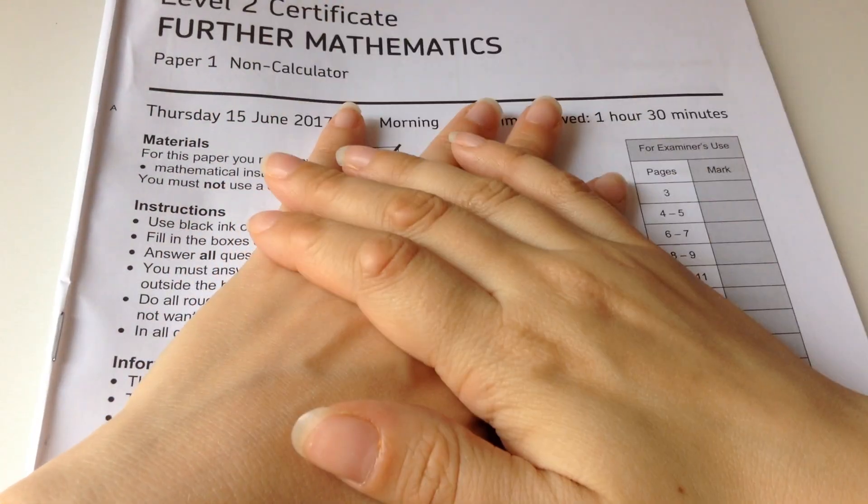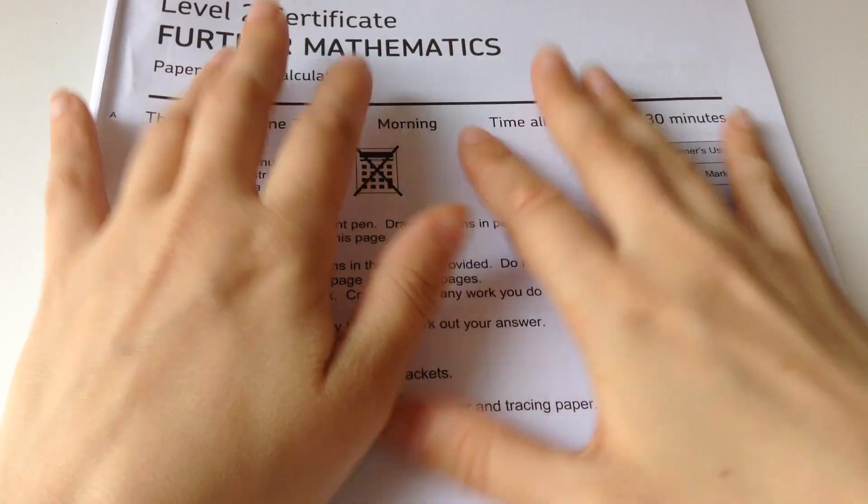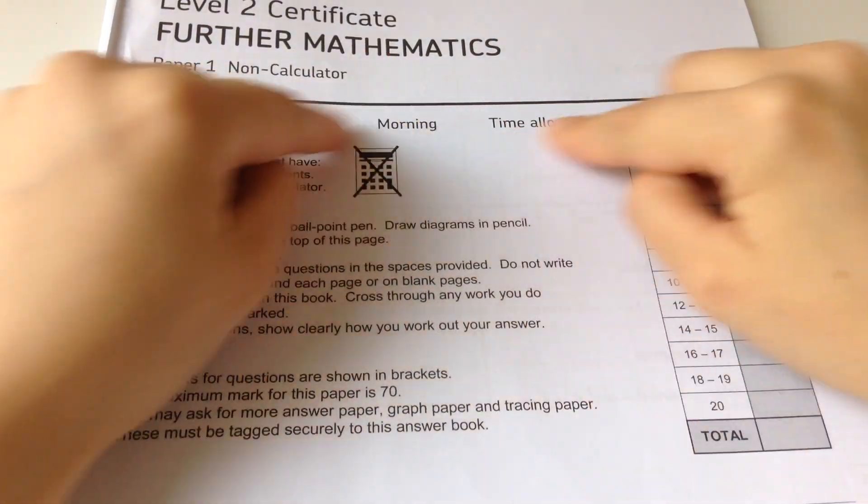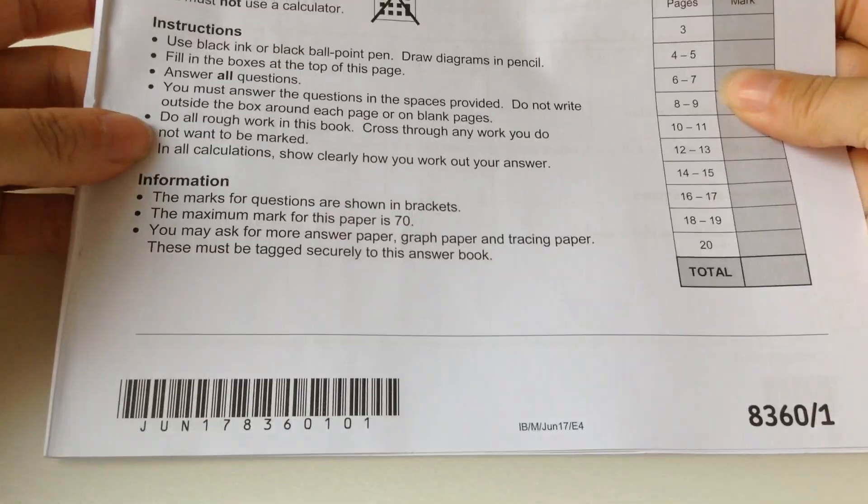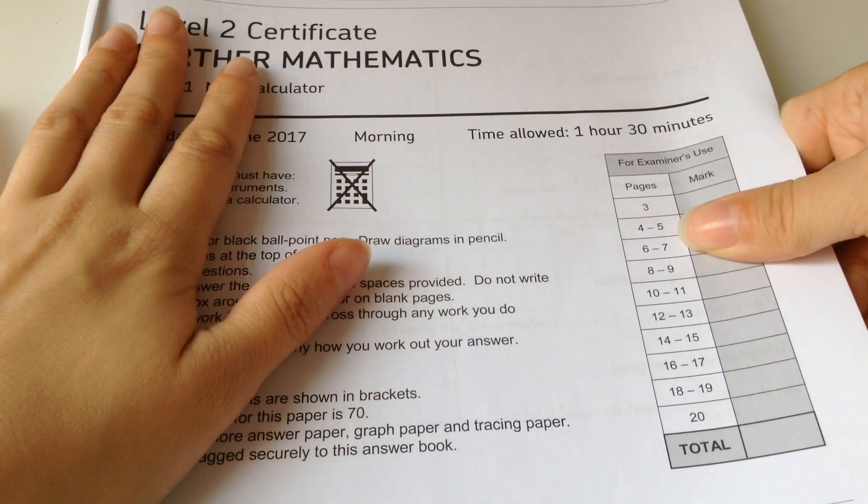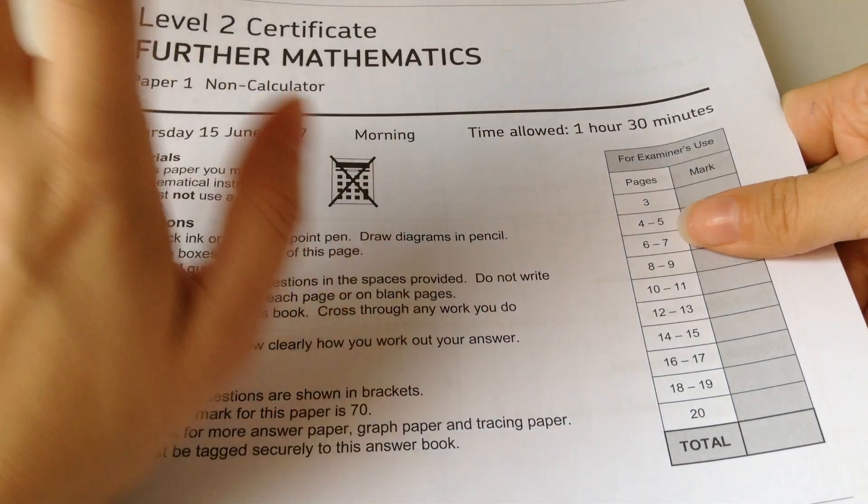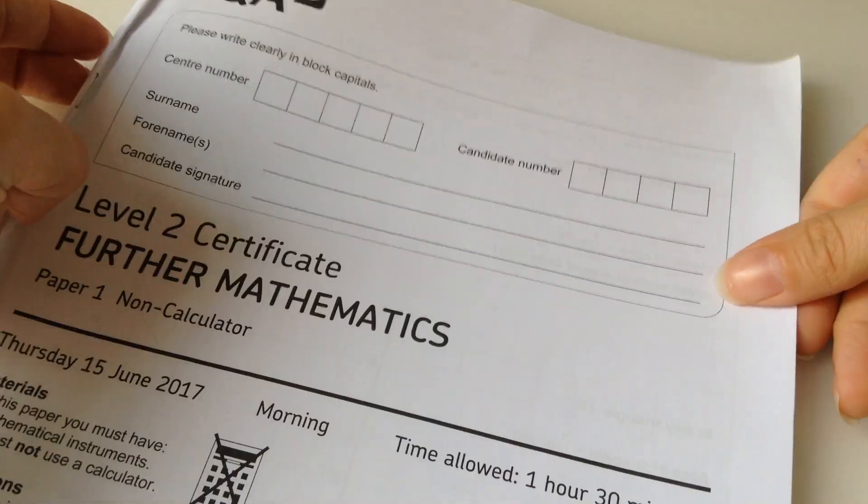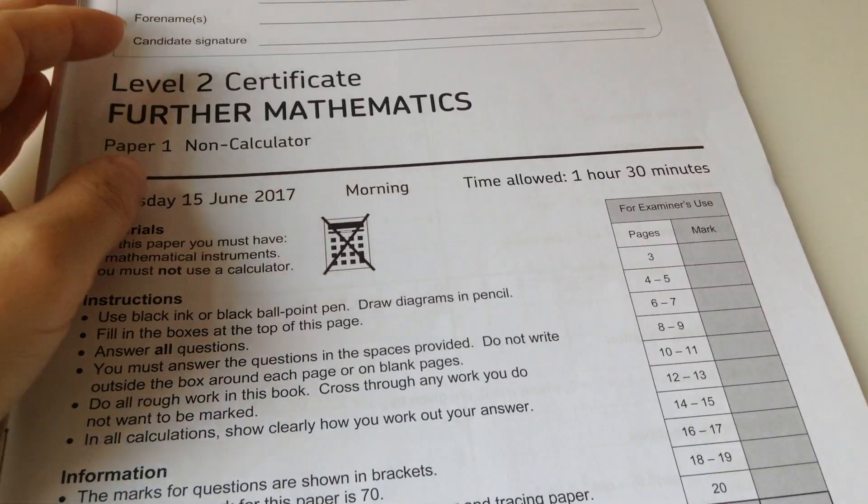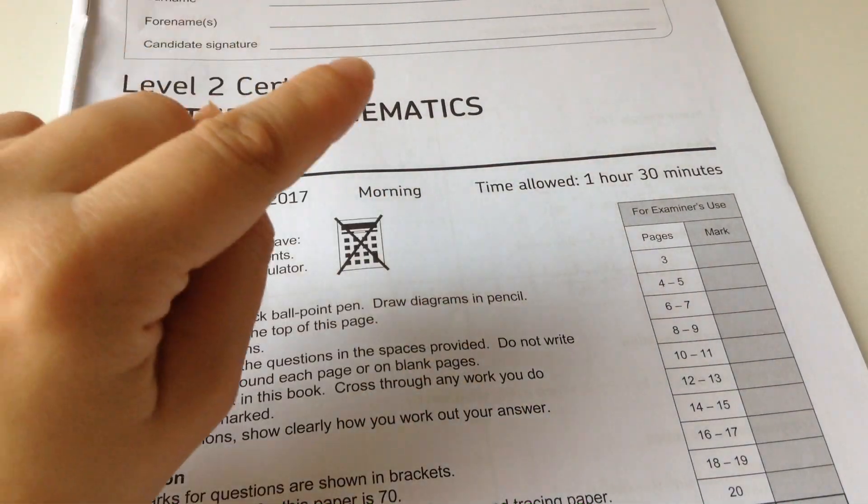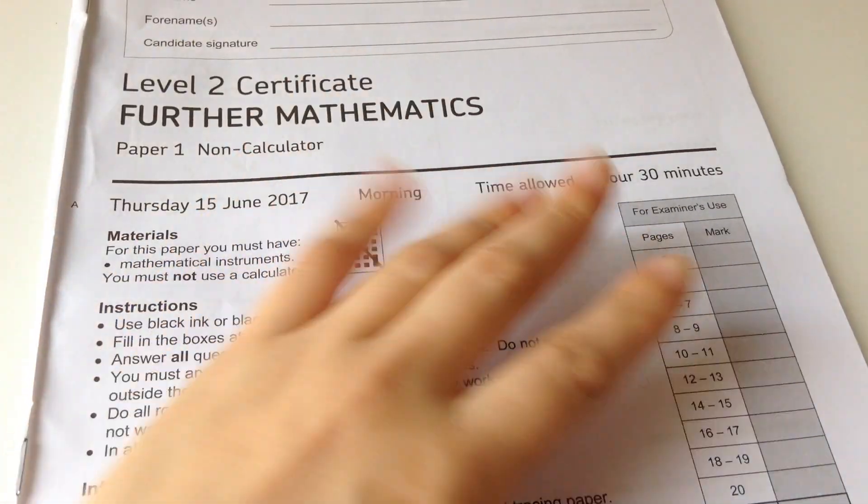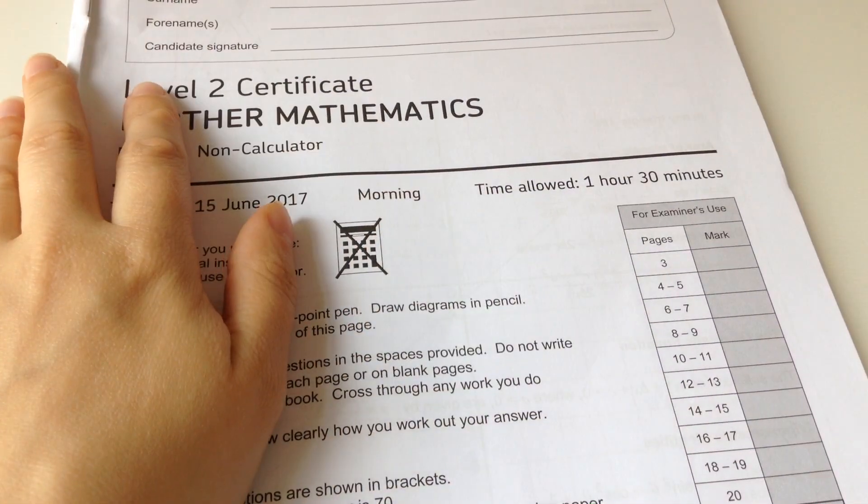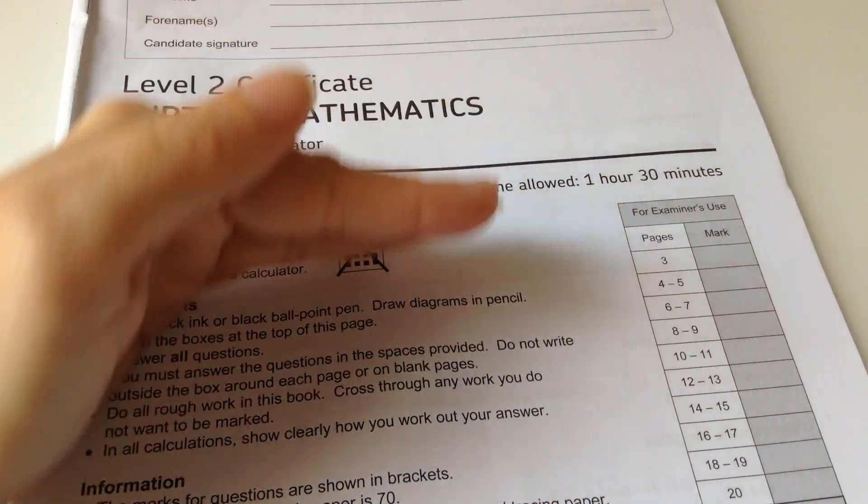Now, the good news is, this paper was not just harder for our class. Okay. Because this paper has been done by everyone doing further maths in the whole country. Everyone. Everyone. There's not even a different exam. Like, only AQA does further maths. So, if you found it hard, and I found it kind of hard, right? Everyone in the country found it hard. So, grade boundaries go down.